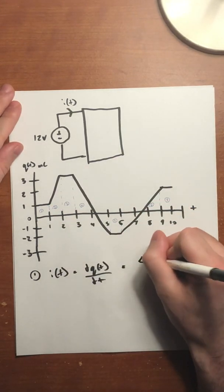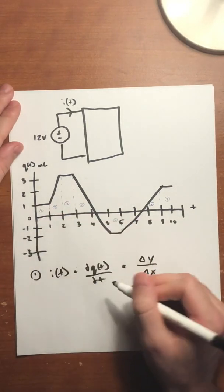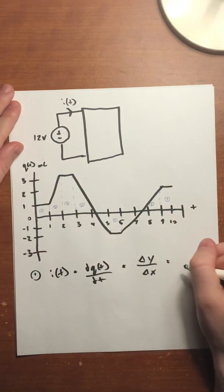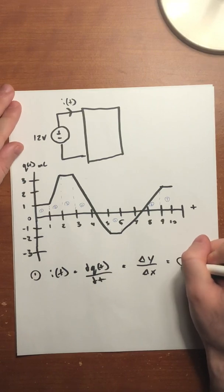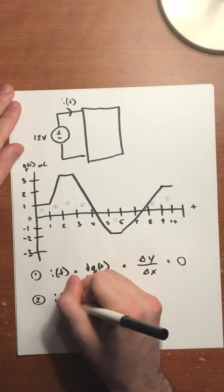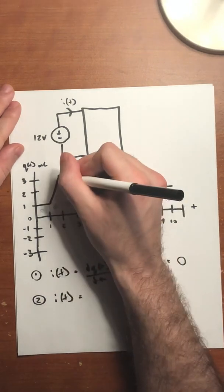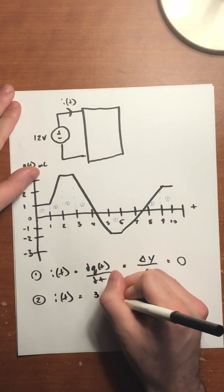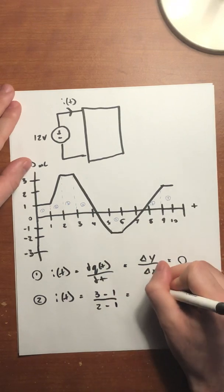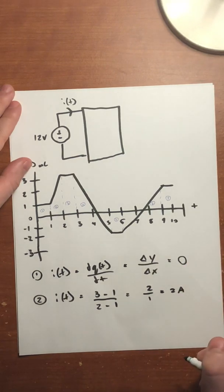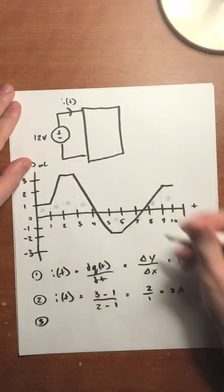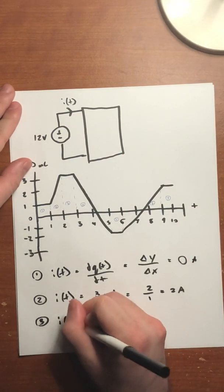The slope is delta y over delta x. Between 0 and 1 millisecond, it's a constant line — there's no change in the y-axis, so the current is 0 amps. For section 2, between 1 and 2 milliseconds, the charge is increasing. The slope is (3 minus 1) divided by (2 minus 1), which gives us 2 over 1 — that's 2 amps. For section 3, same as section 1, there's no change in the y-axis, so the current is 0 amps.